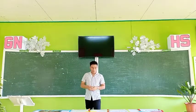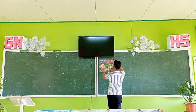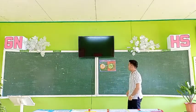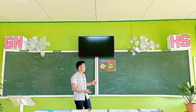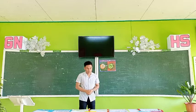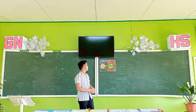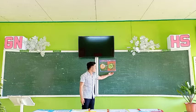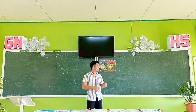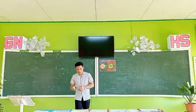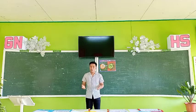Welcome to another lesson in Science 7. To start with, I have here a chart. I want you to identify picture A and picture B. What do you think is picture A? Very good. Picture A is an animal cell. What about picture B? Very good. Picture B is a plant cell. So, what do you think is our lesson this morning based on these two pictures? Our lesson for today is all about animal and plant cells.